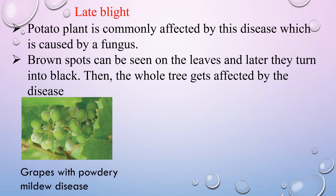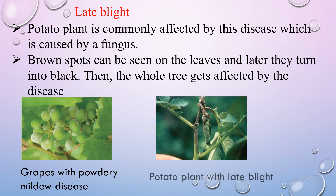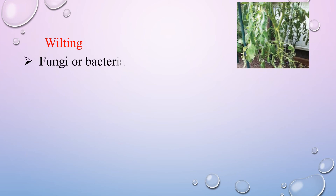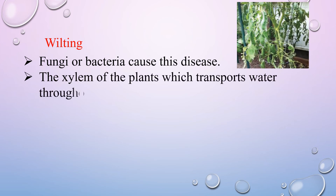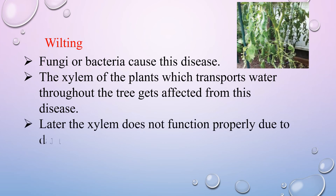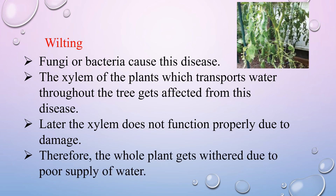You can observe grapes with powdery mildew disease and a potato plant with late blight. The next plant disease is wilting — you can observe a tomato plant with bacterial wilting. Fungi or bacteria cause this disease by infecting the xylem, which transports water throughout the plant. As the xylem becomes damaged and fails to function properly, the whole plant gets withered due to a poor supply of water.